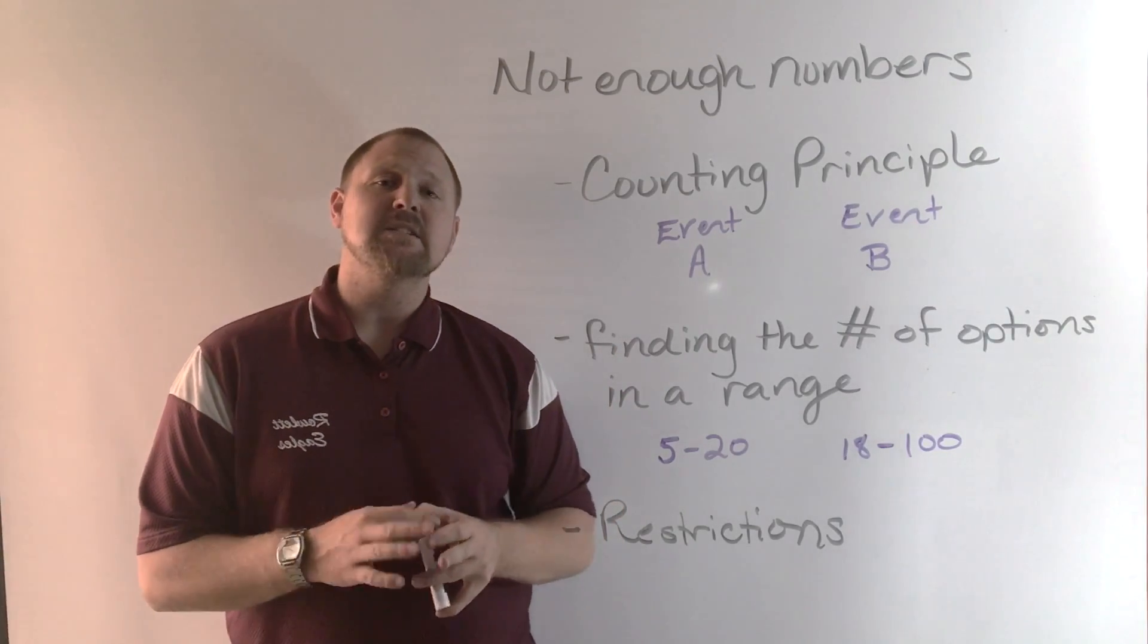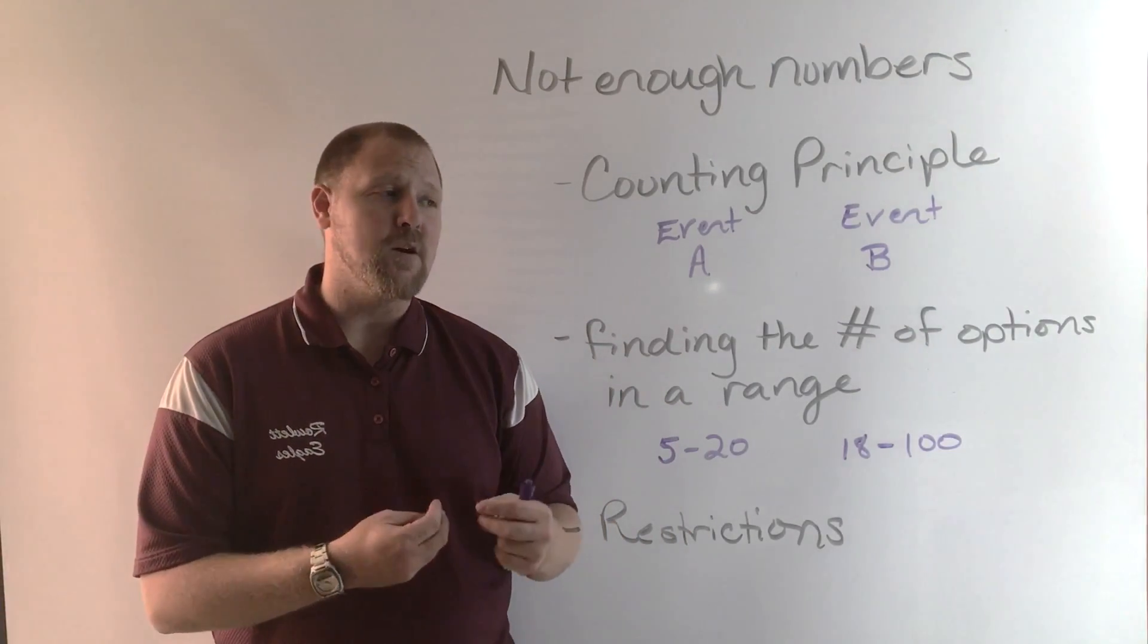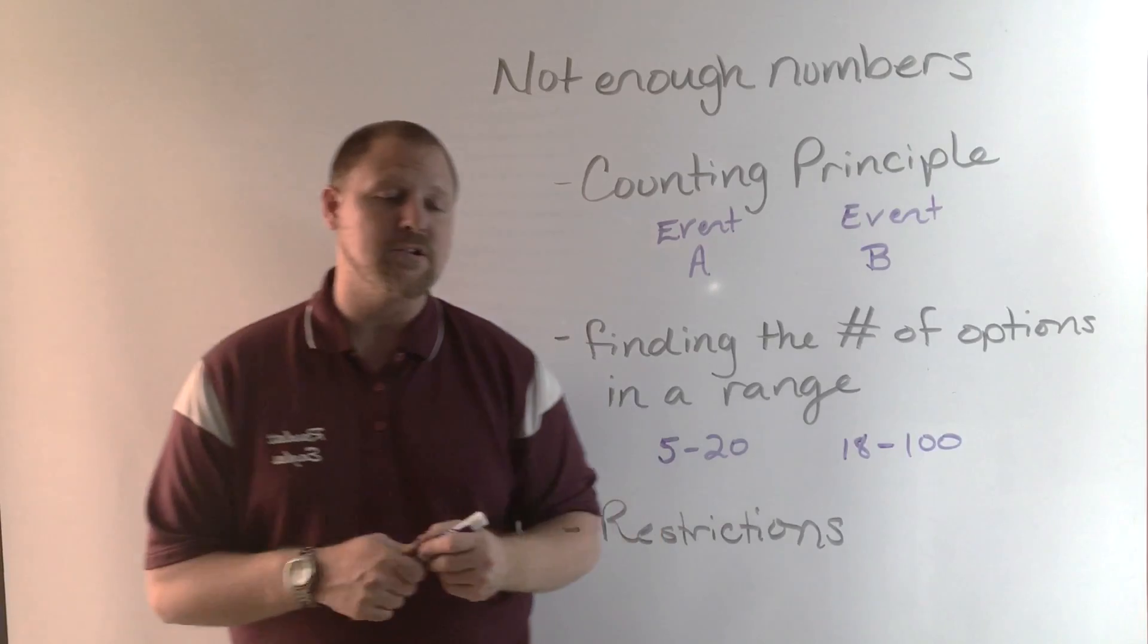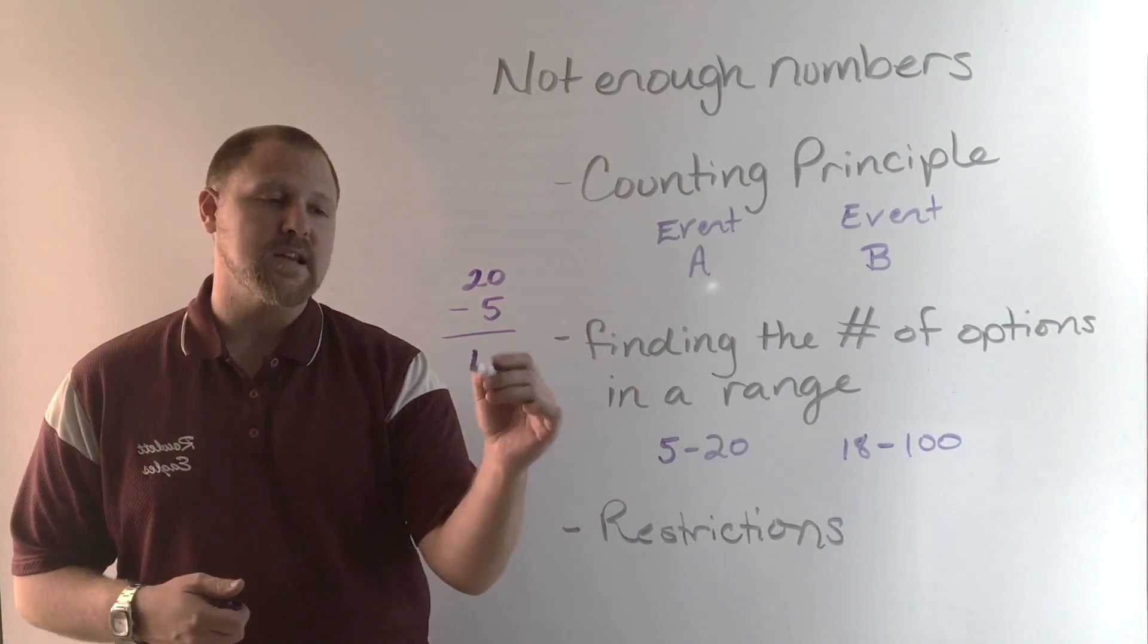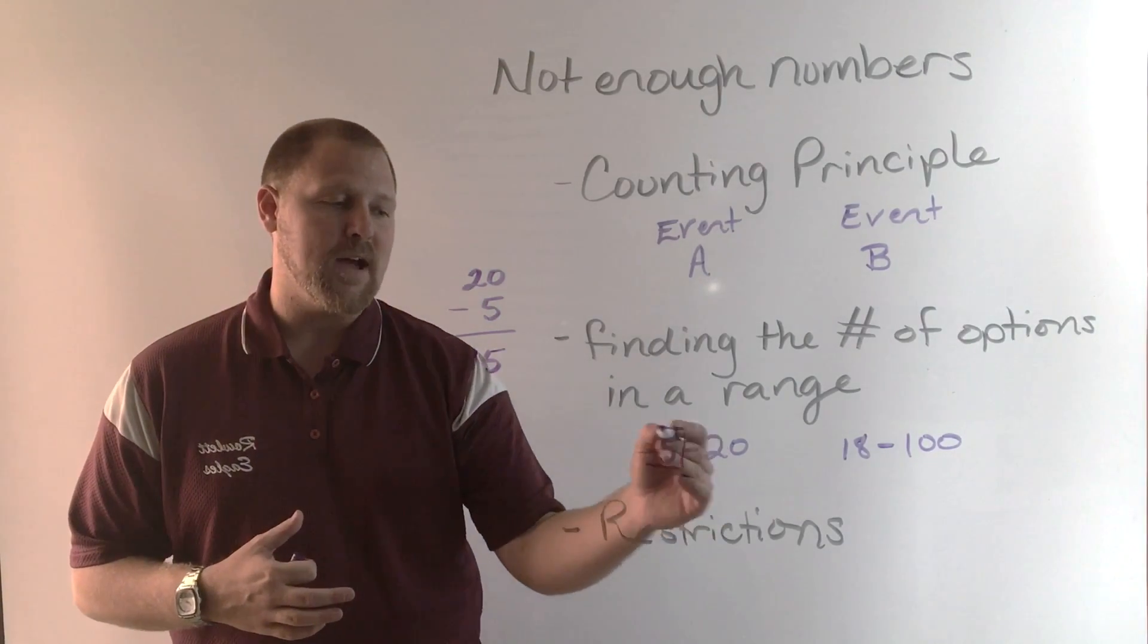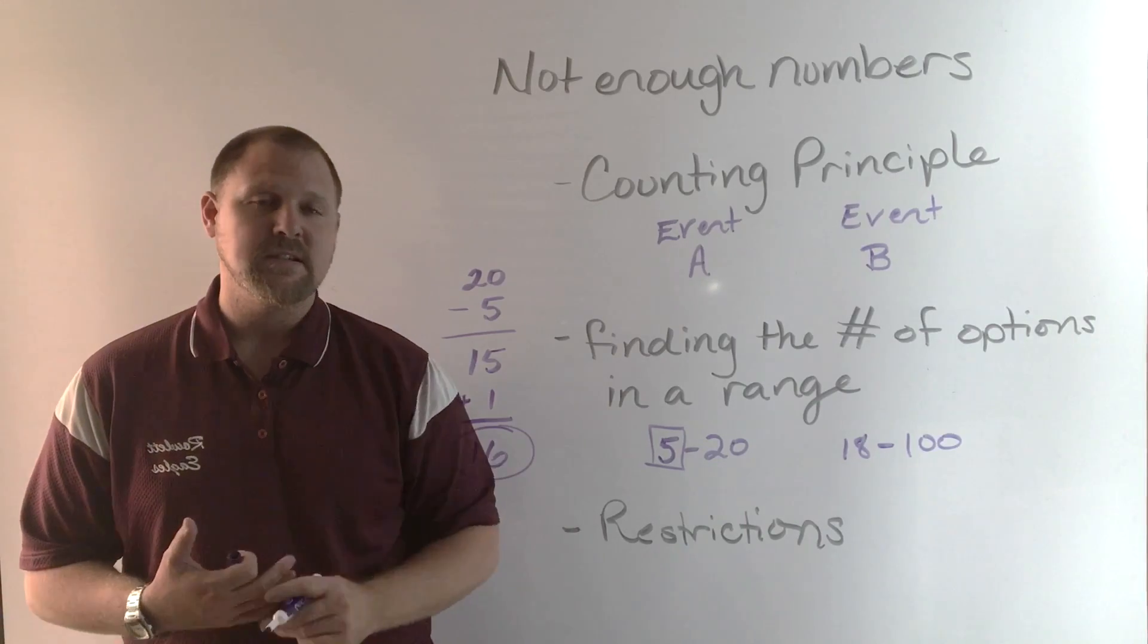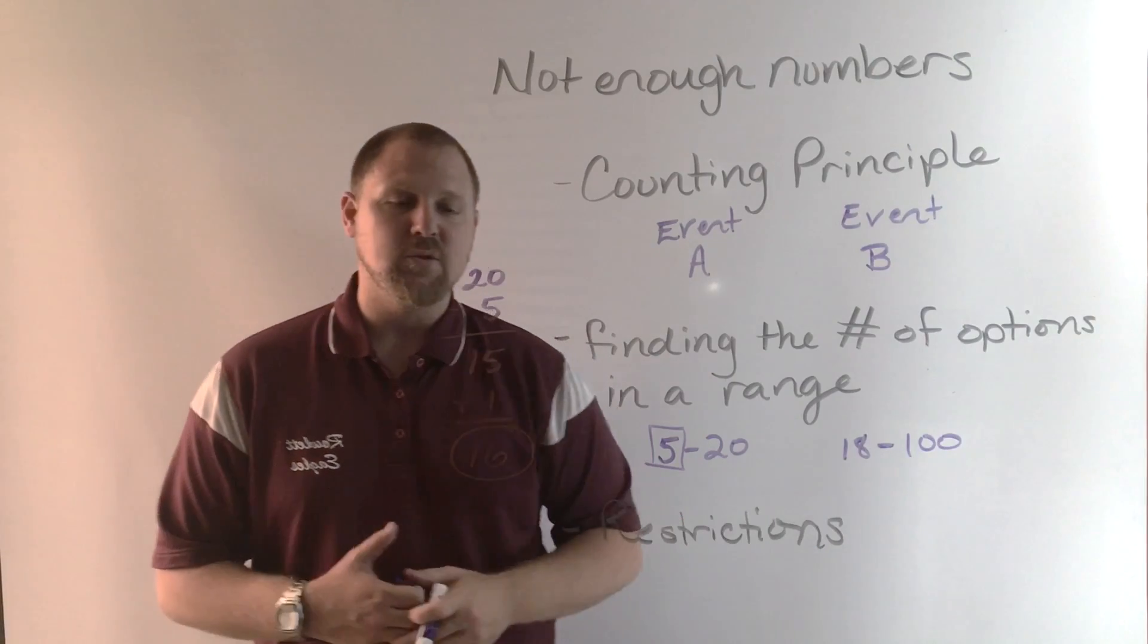Most students will simply just subtract these numbers. In order to find the number of options in this range, we not only have to find the difference, but then we have to add one to it. If we take 20 minus 5, most students will say that's 15 options. But what they're forgetting is that we start with 5, and 5 is a valid option. So we have to add that 5 back. There are 16 options in this range of numbers from 5 to 20.